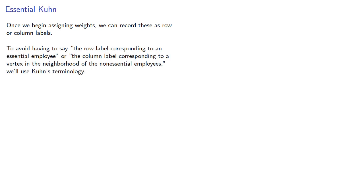Now once we begin assigning weights, we can record these as row or column labels. To avoid having to say things like the row label corresponding to an essential employee, or the column label corresponding to a vertex in the neighborhood of the non-essential employees, we'll use Kuhn's terminology.